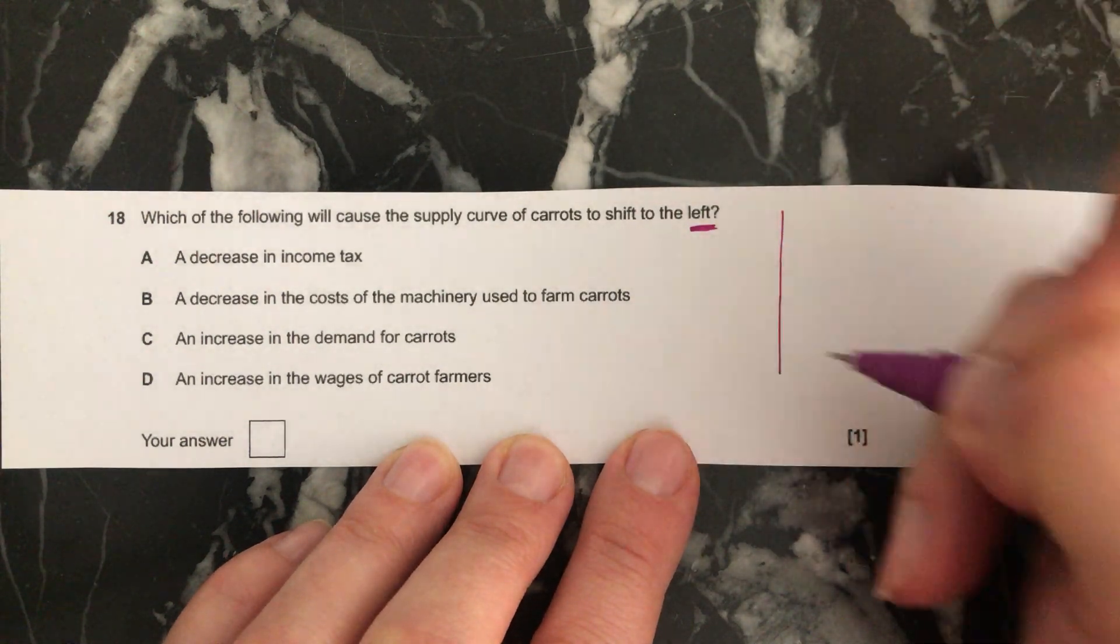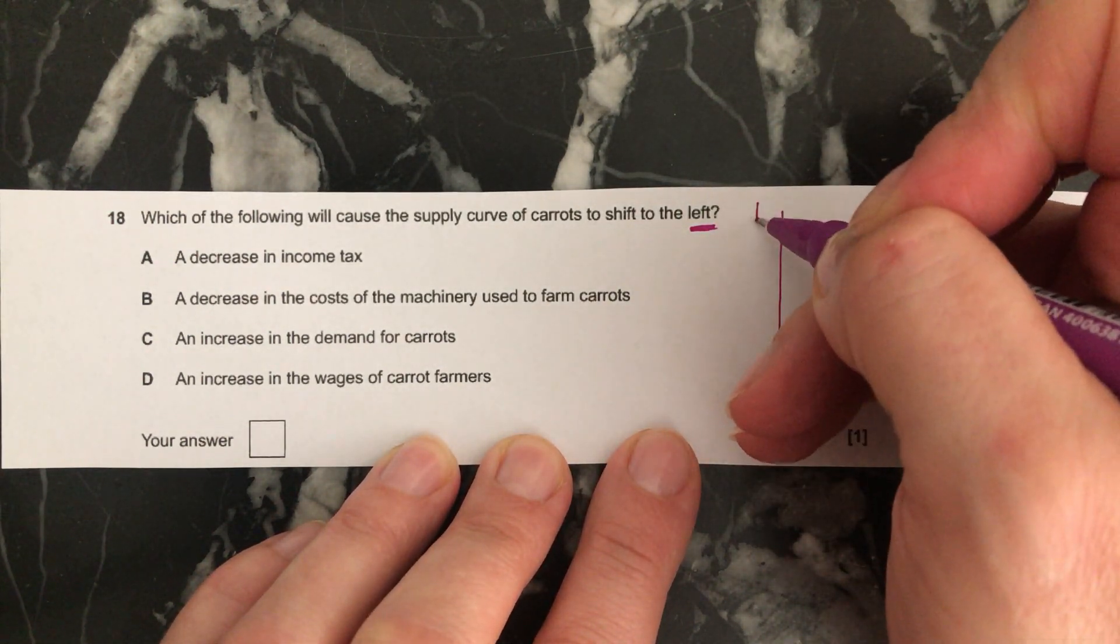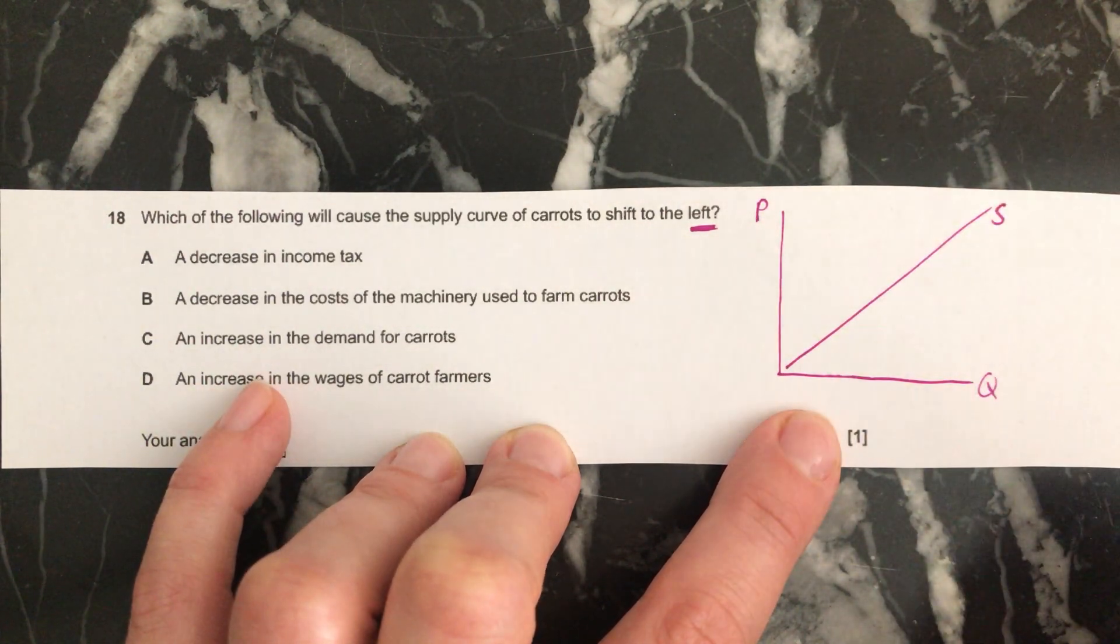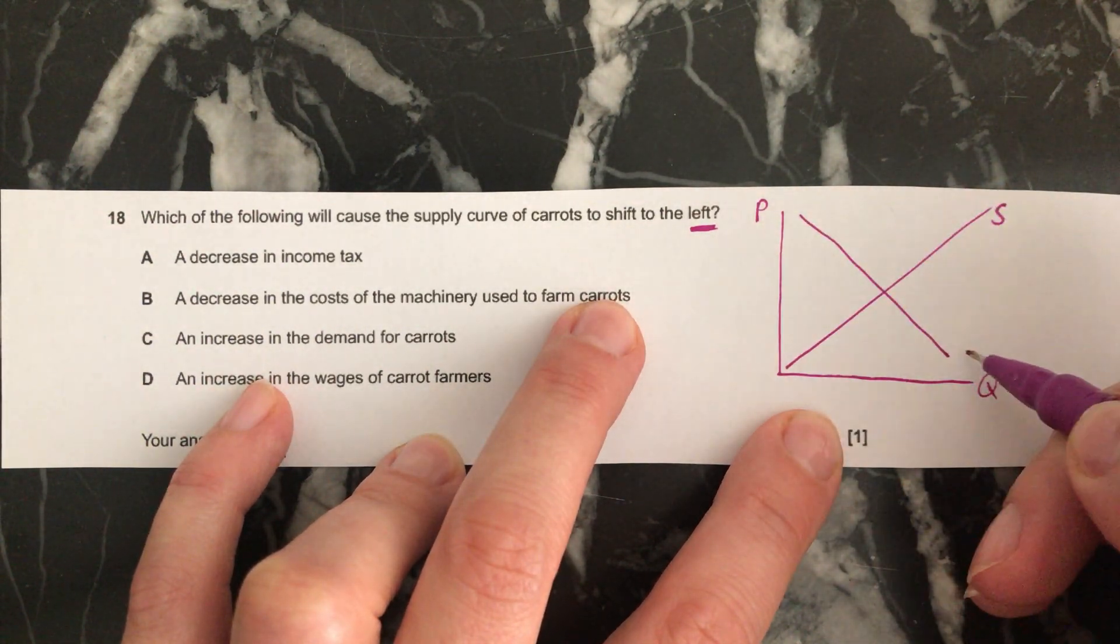The diagram that you would have for this one, remember P comes before Q, and supply shoots up into the sky, and demand goes down.